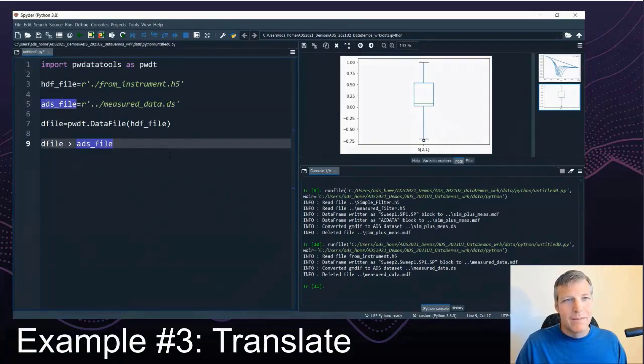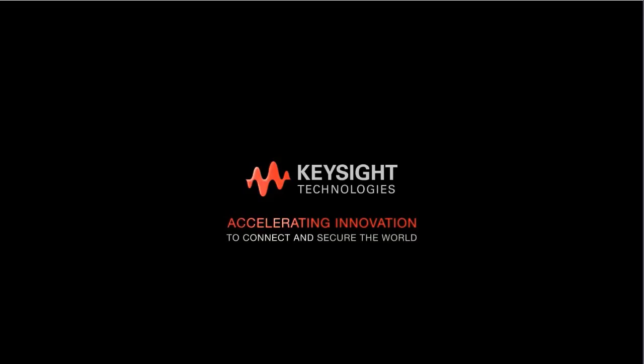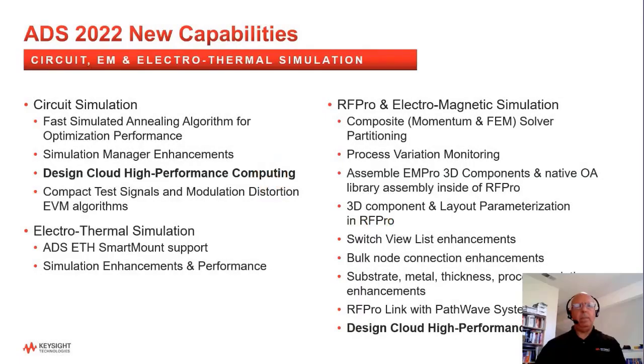Of course, there's many new simulation capabilities, including a new fast simulated annealing algorithm to improve optimization performance, as well as new electrothermal and RF pro capabilities. For today, I'd like to highlight the new design cloud capability in ADS. Last release, design cloud supported EM simulations with RF pro. And in this release, design cloud will support ADS circuit simulations. Cedric will give you an overview of this capability.